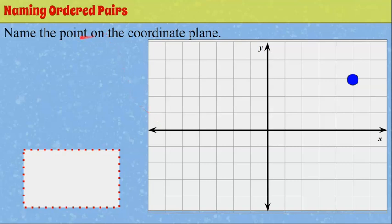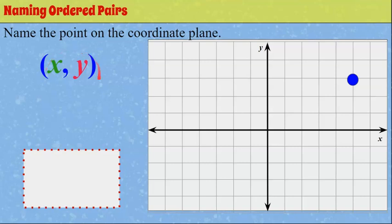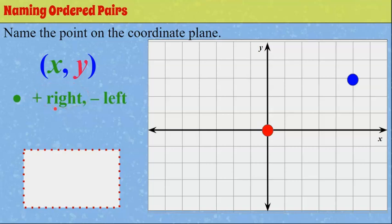Now let's talk about naming ordered pairs. Just like you have a name, ordered pairs have a name — that name tells you the location of the point on our coordinate plane. We name it in this format: parentheses, x-coordinate, comma, y-coordinate. The coordinate plane is two-dimensional; we have an x-axis and a y-axis, and we name it alphabetically — x location, then y location.